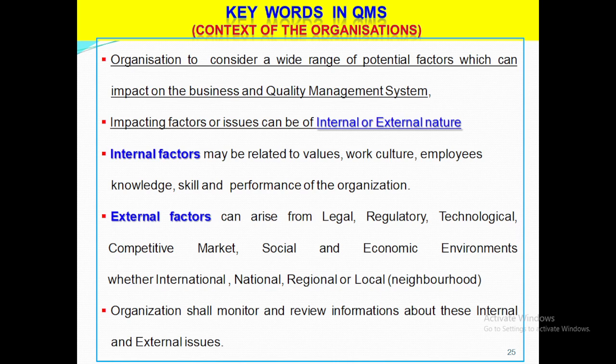Let's see some important key words used in the latest ISO 9001-2015 standard. First, context of the organization — the organization must first consider a wide range of potential factors which can impact on the business and quality management. Impacting factors or issues can be internal or external. Internal factors may be related to management values, work culture, employees' knowledge, skill and performance. External factors can arise from legal, regulatory, technological, competitive market, social and economic environments, whether international, national, regional or local, and the neighborhood. The organization should monitor and review information about these internal and external issues and take correct steps to address them at the earliest.